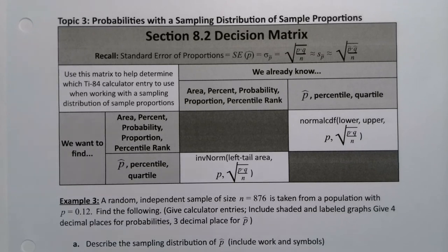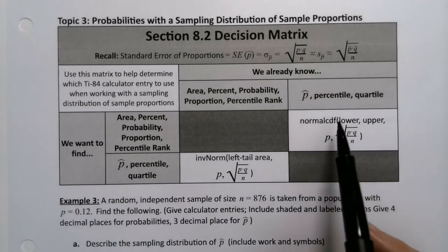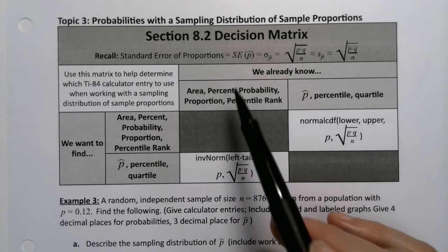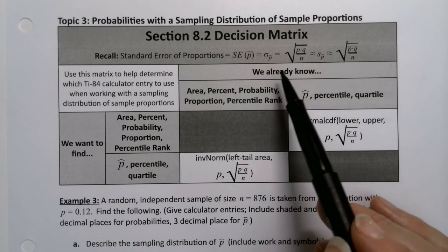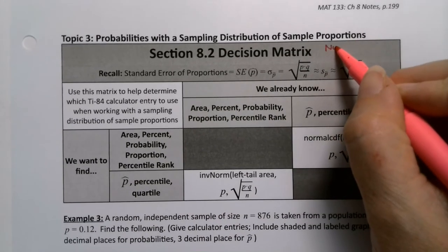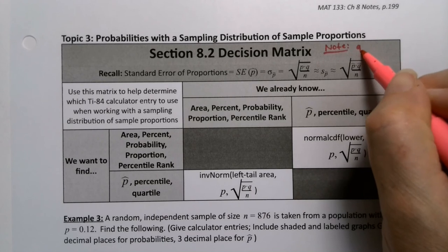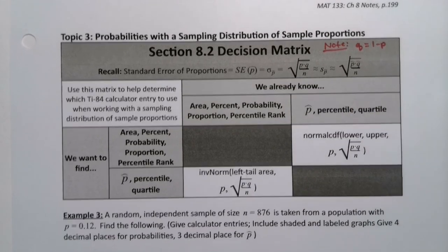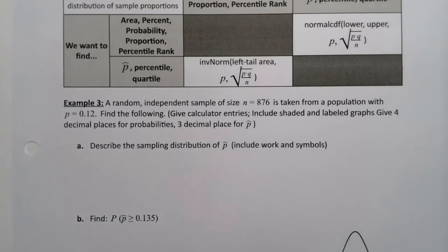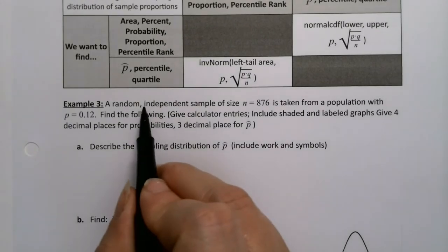The exam notes packet has p times 1 minus p. In fall 2020, I will actually change it to match this one and just make a note that q is 1 minus p, as per usual. So there we go. Let's do an example, and as we do this example, remind ourselves how to do all this.